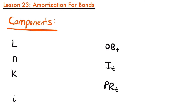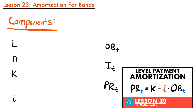Welcome back. Today we're going to be talking about amortization for bonds. Previously we talked about the amortization method as it pertains to loan repayment, but today we're going to talk about how to use the amortization method for bonds, because sometimes when working with bonds it's necessary to determine the amount of interest received or principal return in a bond coupon or redemption payment. If you haven't watched our lesson on level payment amortization for loan repayment, be sure to watch that first.